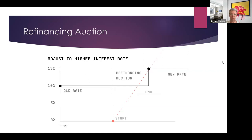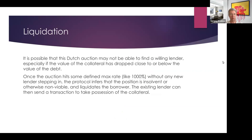This is how refinancing works: the rate starts at the old level (say 10–15%) and someone may come in and agree at the new rate. Liquidation occurs when, during the Dutch auction, no willing lender is found — typically because the collateral's price has dropped and lenders evaluate it at a lower value.